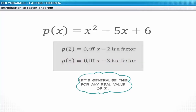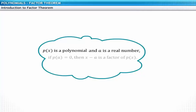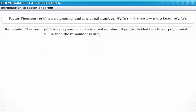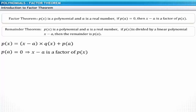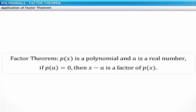Based on the above discussion, p of 2 equals 0 if and only if x minus 2 is a factor. Similarly, p of 3 equals 0 if and only if x minus 3 is a factor. Generalizing for any real value: if p of x is a polynomial, a is a real number, and p of a equals 0, then x minus a is a factor of the polynomial. This is known as the factor theorem, and is an extension of the remainder theorem.